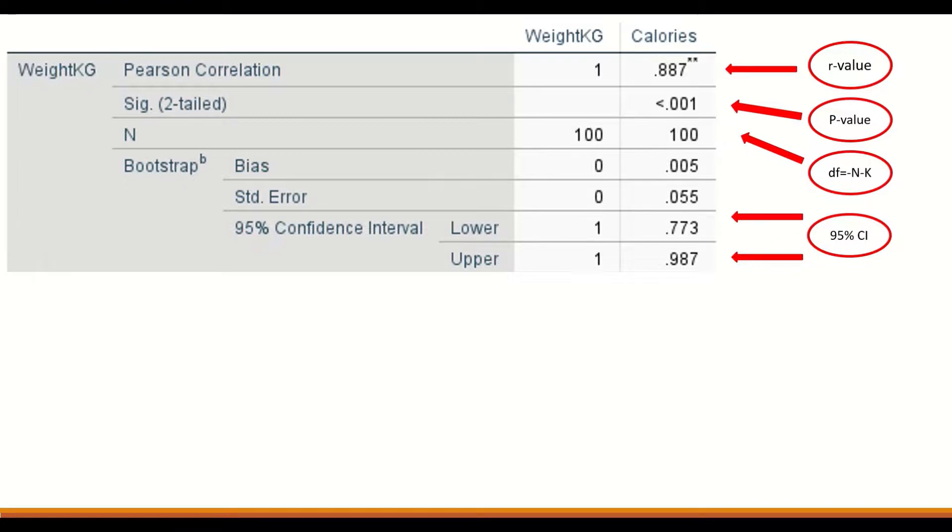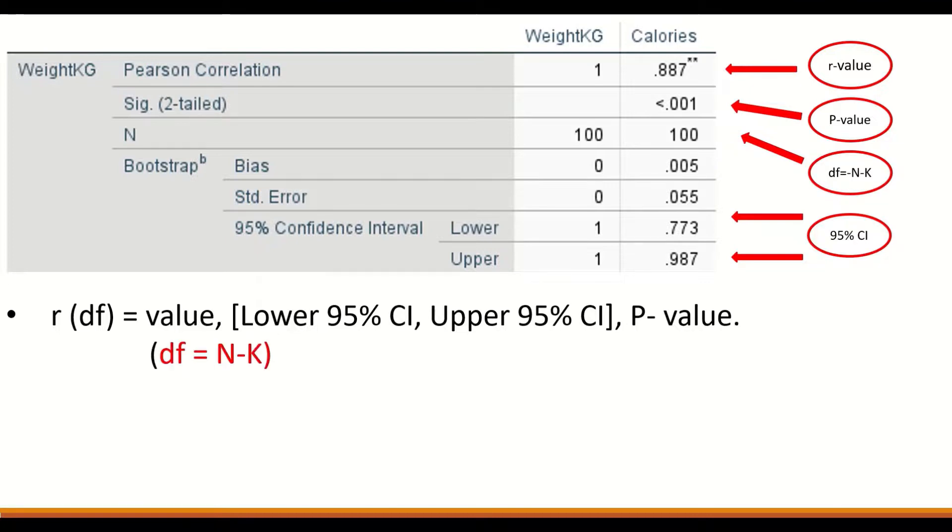How do we insert this into a text or Word document? The way to write it is to use the line below: R, which stands for correlation between two, then in brackets the degree of freedom.